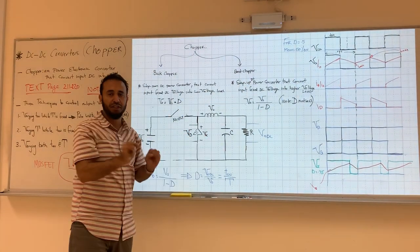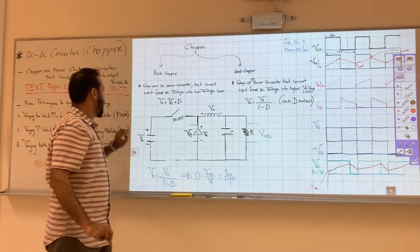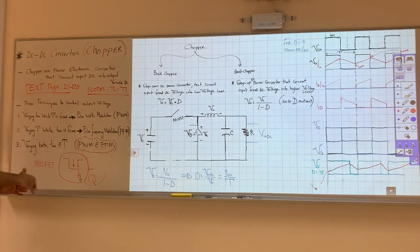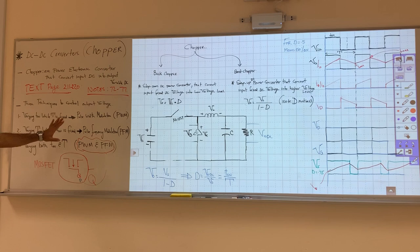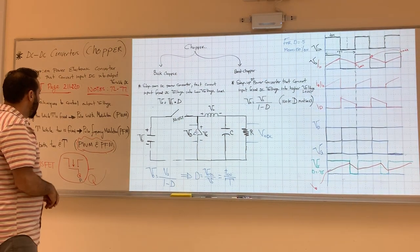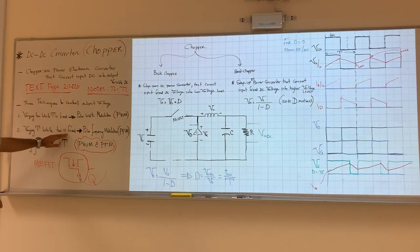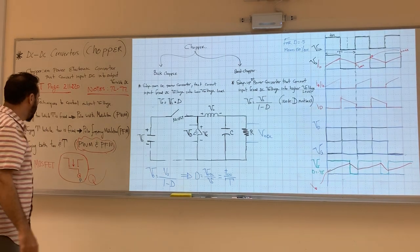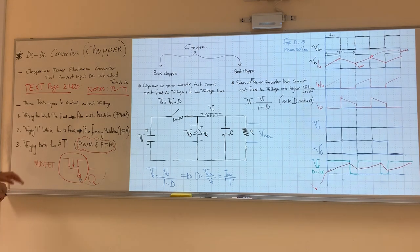This circuit is still the circuit for the buck chopper. I'm going to show you a small technique how to make the boost, and this explanation is for both — we use three techniques to control output voltage: varying T_on while big T is fixed, using pulse-width modulation, or varying the big T while T_on is fixed, which is pulse-frequency modulation.